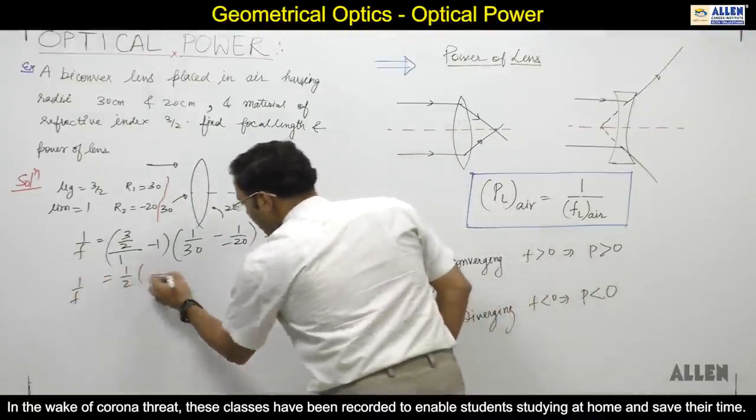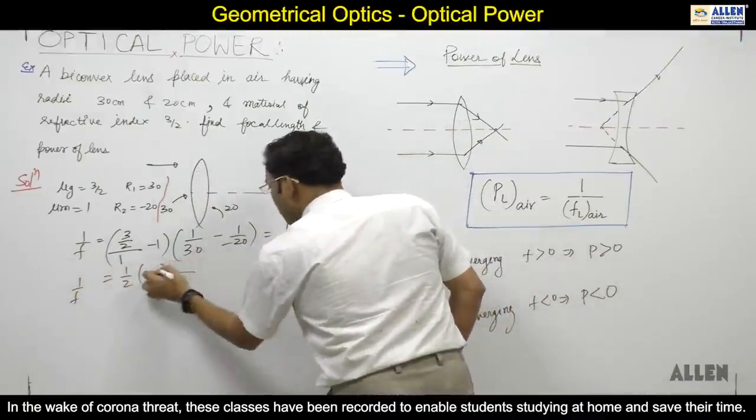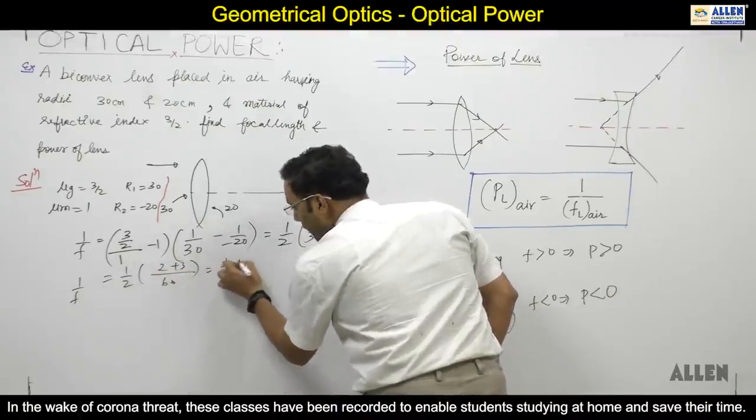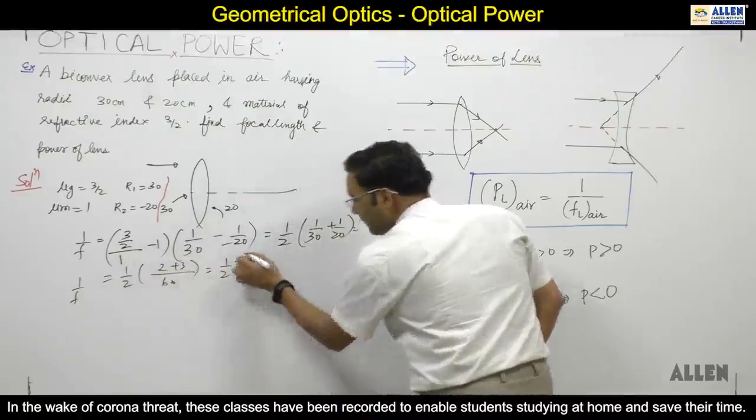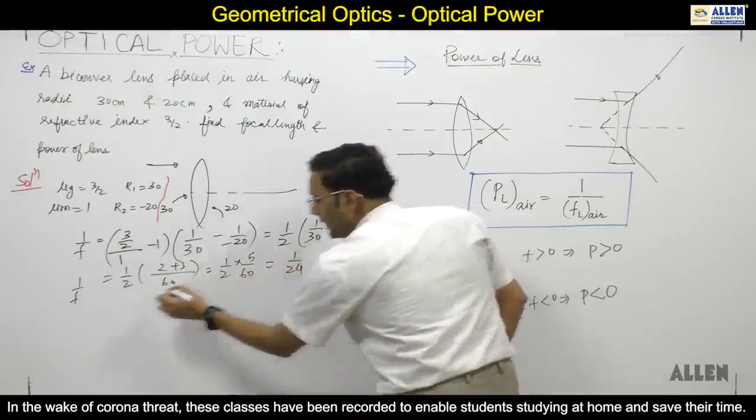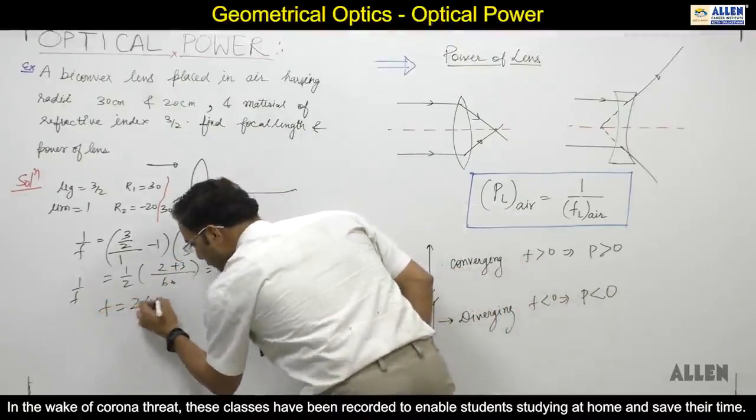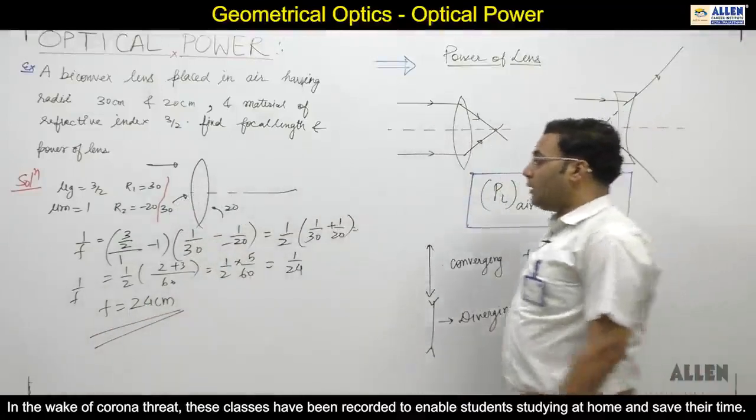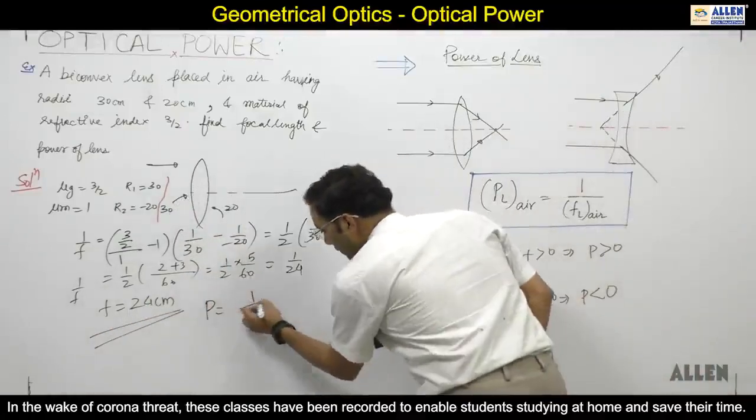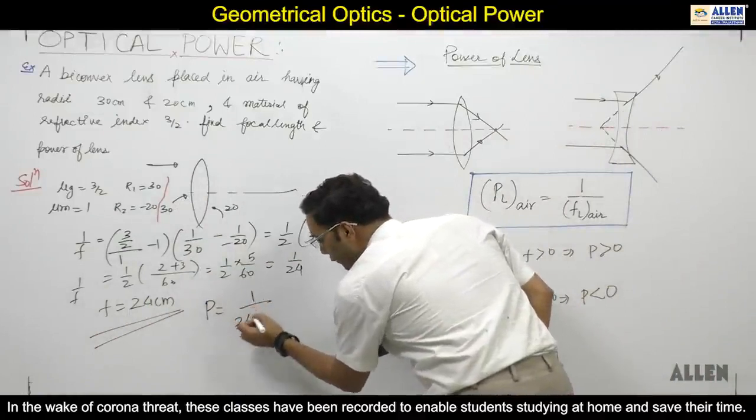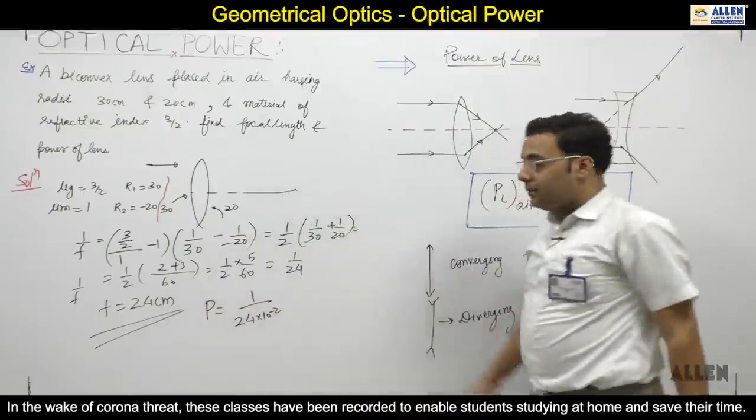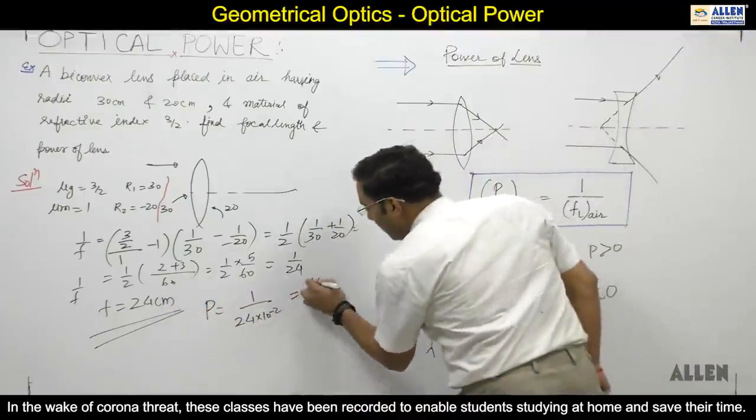This is common: 60. Two plus three is five. So 1 by 2 into 5 by 60 equals 1 by 24. F turns out to be 24 cm. Second part: power. Power of the lens is 1 by 24 into 10^-2 to convert centimeters, which equals 100 by 24.